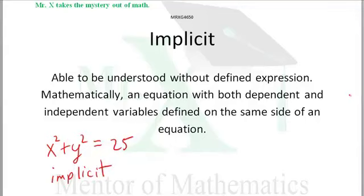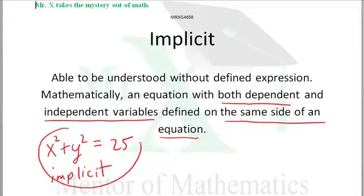Now, we can understand this without defined expression and we have both dependent and independent variables on the same side of an equation. Implicit.